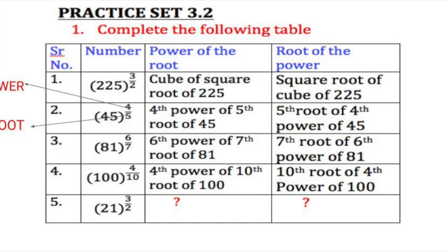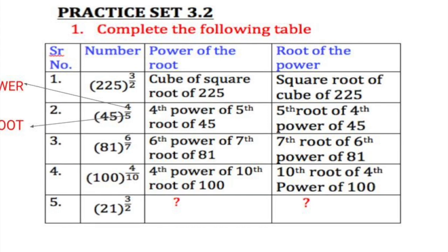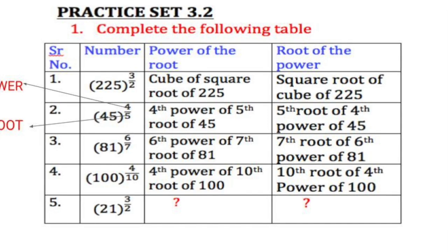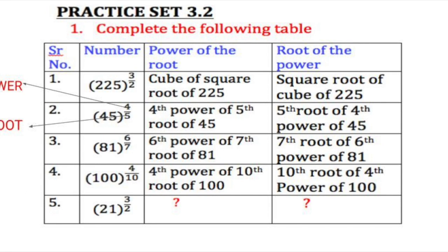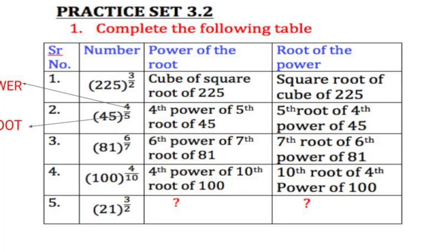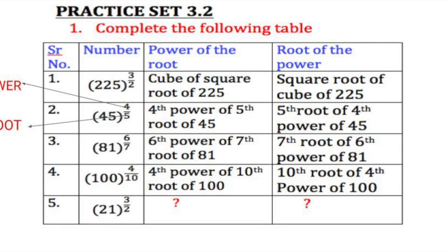Similarly 100 raised to 4 upon 10. Now the numerator comes first when it's power of root. So 4th power of 10th root of 100. And the denominator comes first when it's root of the power. So 10th root of 4th power of 100.